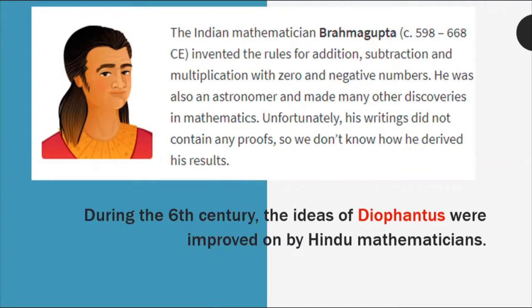After Diophantus, in the timeline, comes the time of Brahmagupta, the Indian mathematician, circa 598 to 668 CE. He invented the rules for addition, subtraction, and multiplication with zero and negative numbers. He was also an astronomer and made many other discoveries in mathematics. Unfortunately, his writings did not contain any proofs, so we do not know how he derived his results. During the 6th century, the ideas of Diophantus were improved on by the Hindu mathematician Brahmagupta.